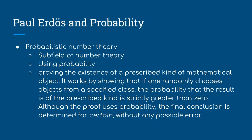Paul Erdos and Probability. Paul Erdos used the probabilistic number theory, which is a subfield of number theory using probability. It proposes that if you have a set of numbers, like 1 through 20, and you pick 7 on the first try, the probability of picking 7 again the second time is very unlikely.